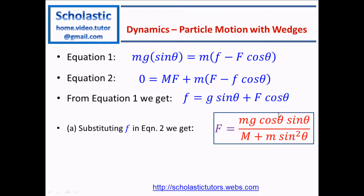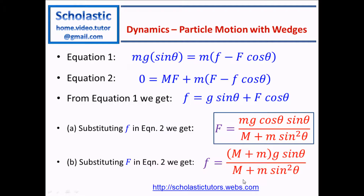Note that one minus cos squared theta becomes sin squared theta in the denominator. Similarly, we substitute capital F back into the equations to find simple F. The numerator is different but the denominator is the same. Simple F is the acceleration of the particle along the inclined axis — that is the second part of the question.